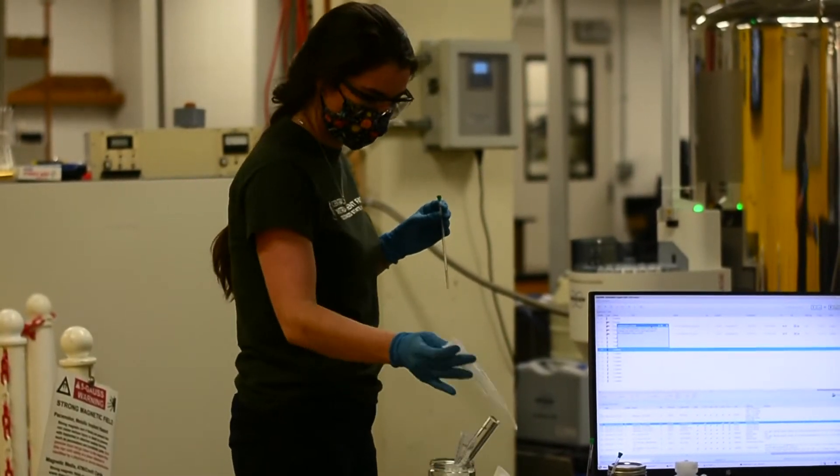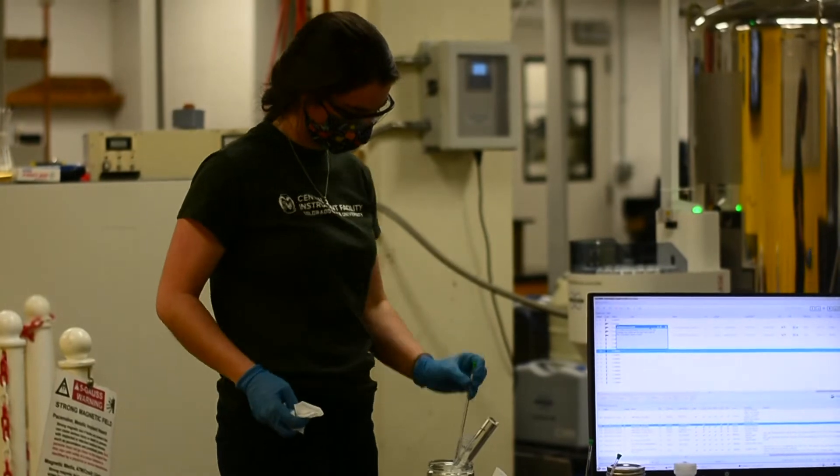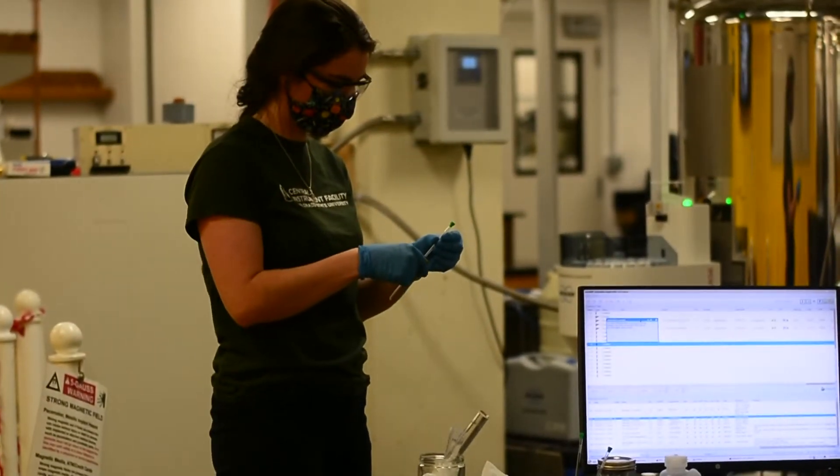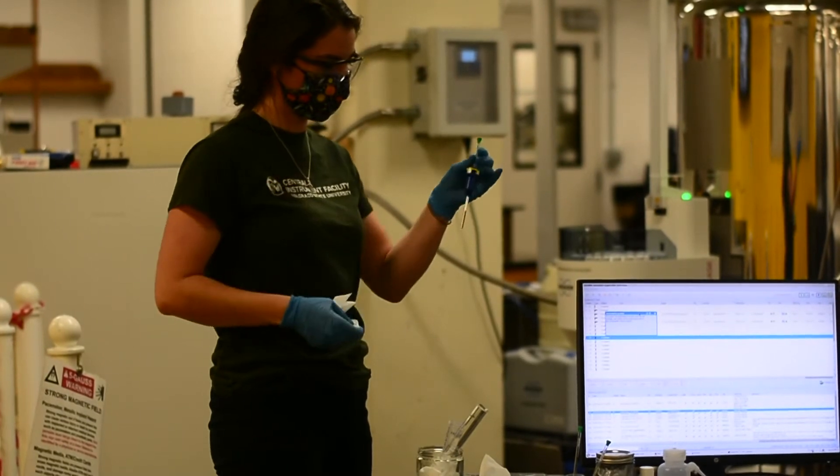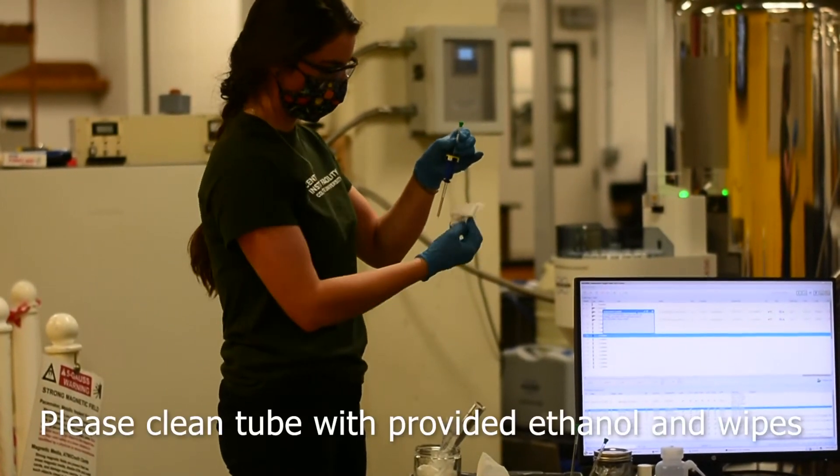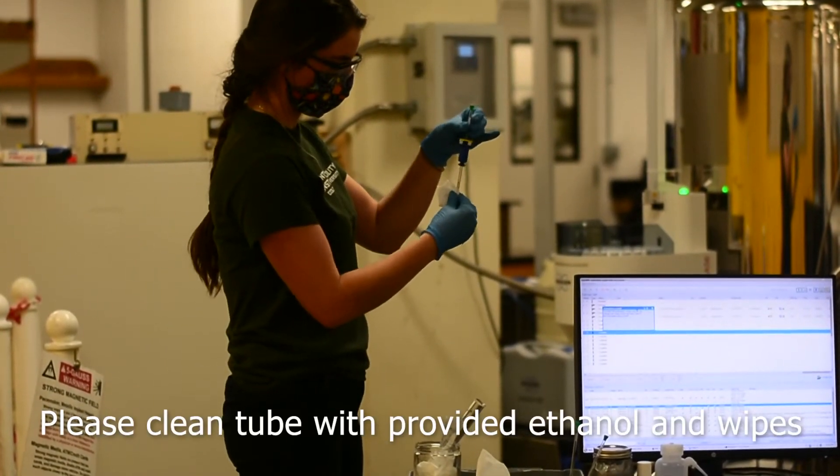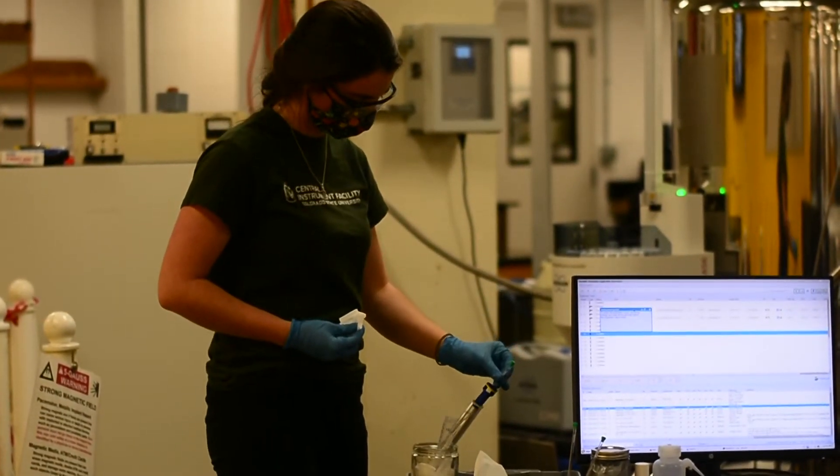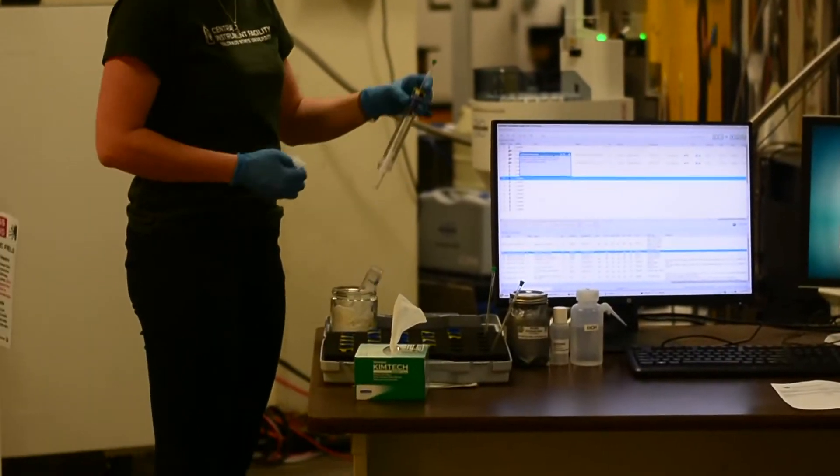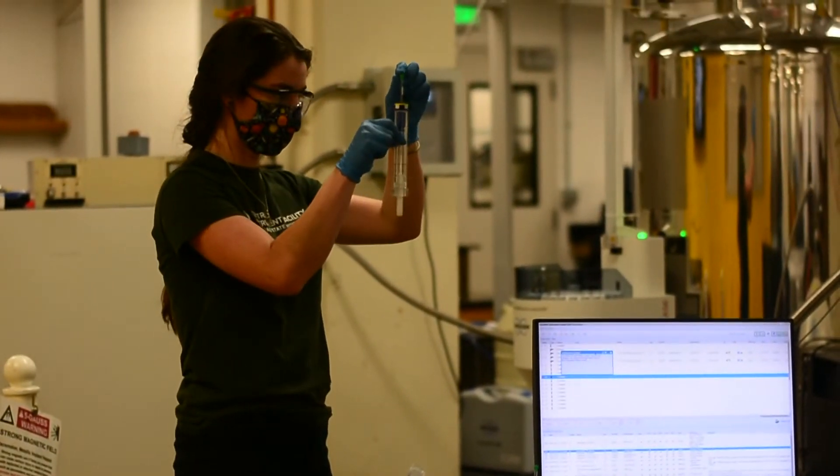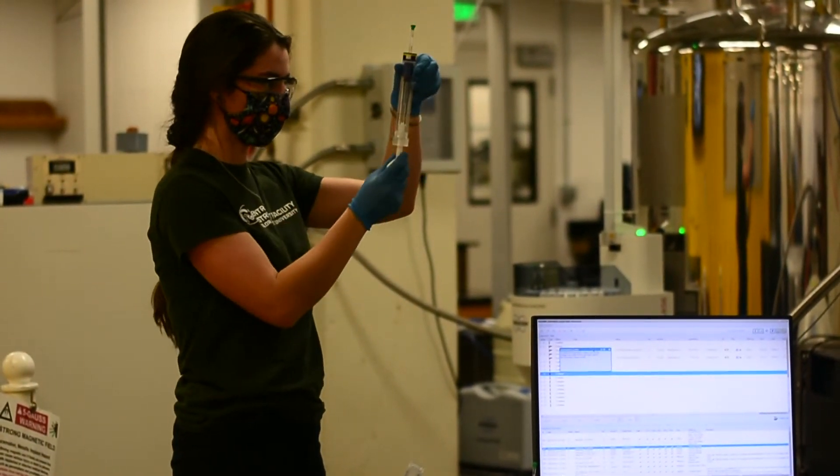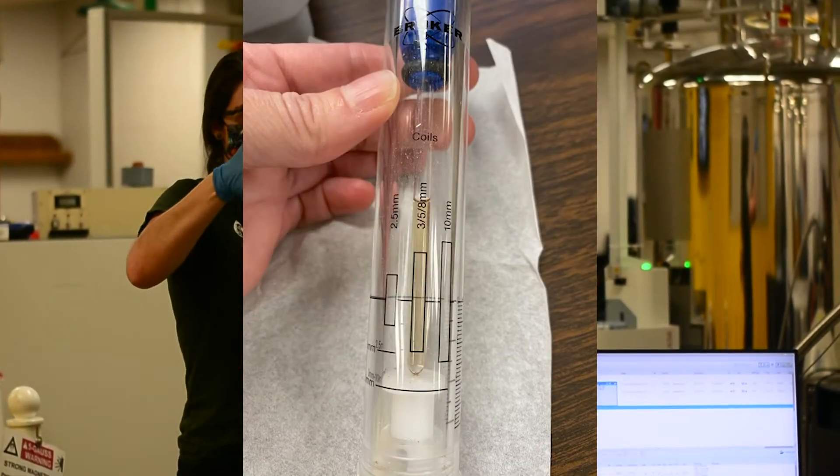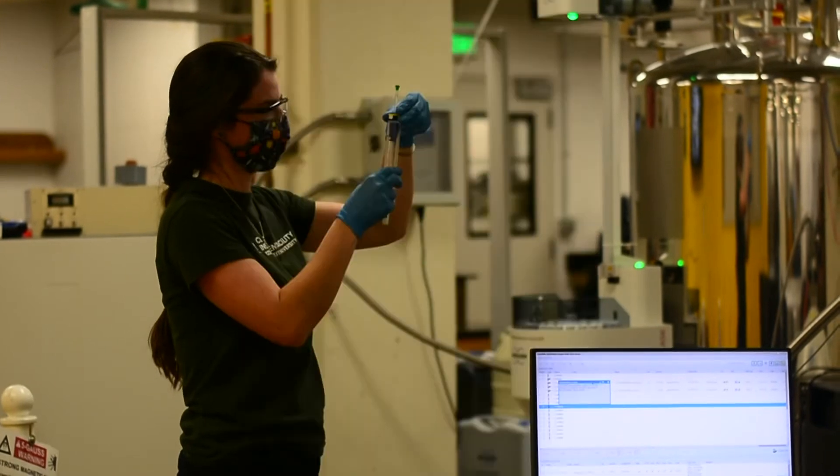Take your NMR sample and load it into a spinner, and then push the spinner far enough up so that you can clean the bottom of the tube. Once you've removed dirt from the tube, gauge it in the sample gauge and make sure that your sample solvent fills entirely the space on the five millimeter line.